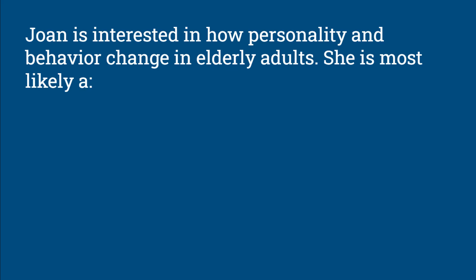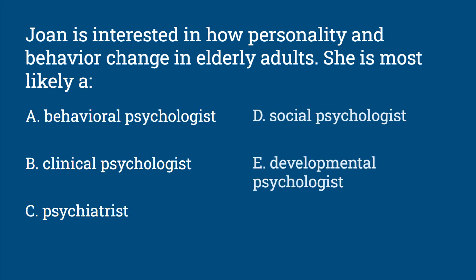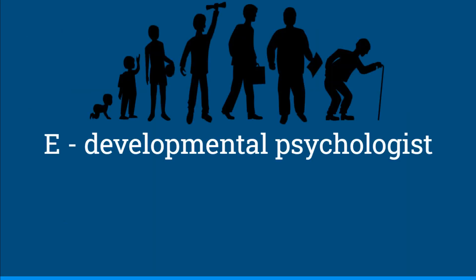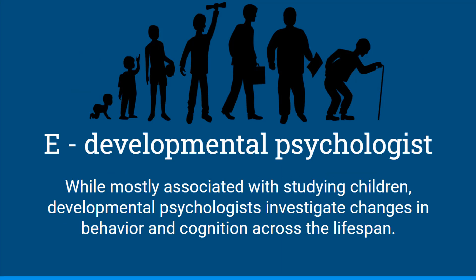Joan is interested in how personality and behavior change in elderly adults. She is most likely — is she a behavioral psychologist, a clinical psychologist, a psychiatrist, a social psychologist, or a developmental psychologist? Joan would most likely be a developmental psychologist. While this field is mostly associated with studying children, developmental psychologists investigate changes in behavior and cognition across the entire lifespan.